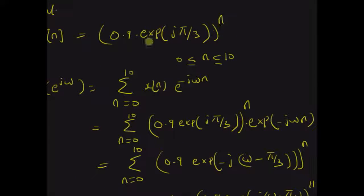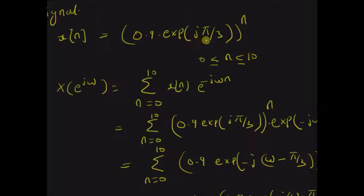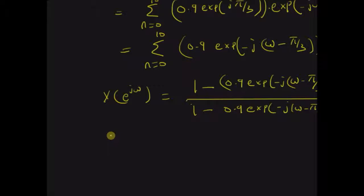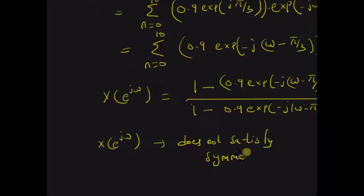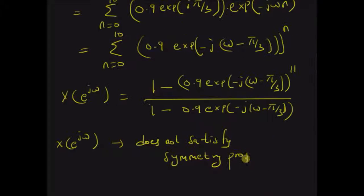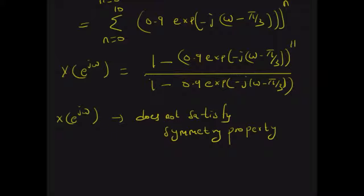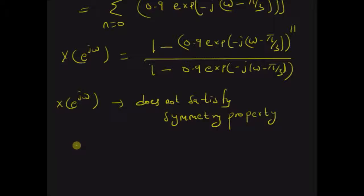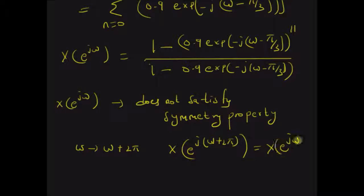Note that the key point in this problem is that the signal x(n) is a complex-valued function. From the symmetry property and the periodicity property, we can see that X(e^jω) does not satisfy the symmetry property, because when you replace ω with −ω, the resulting function X(e^(−jω)) will not be the same as the conjugate of the original DTFT. However, when you replace ω with ω + 2π, the shifted DTFT X(e^j(ω+2π)) is exactly the same as X(e^jω).